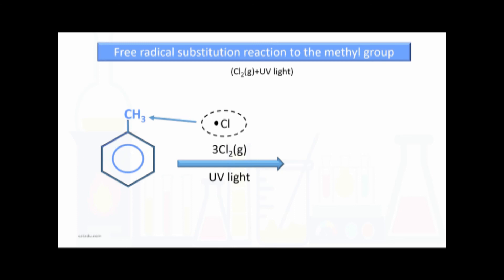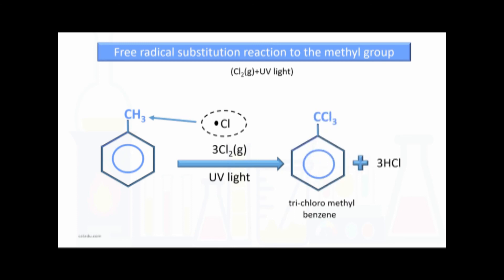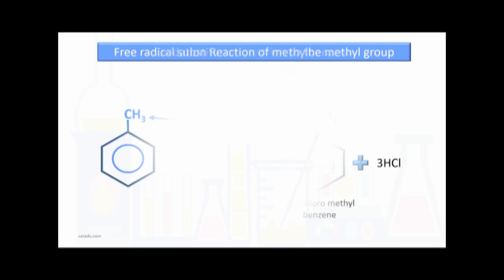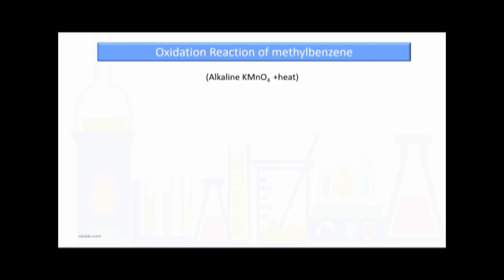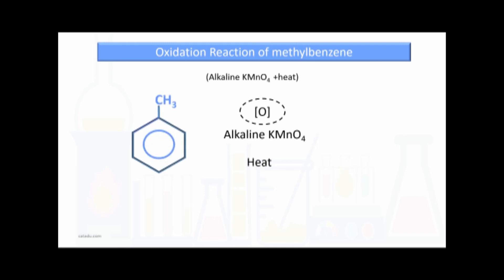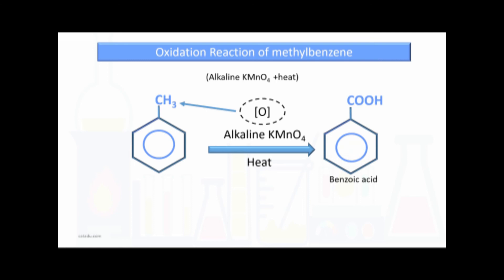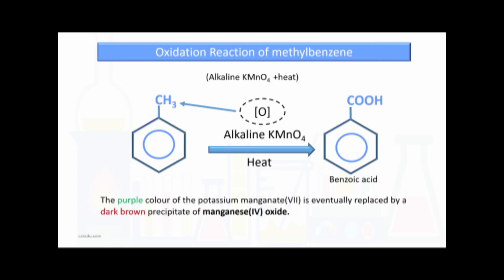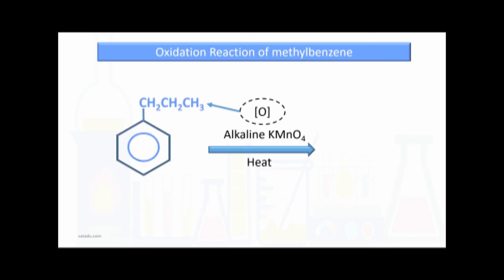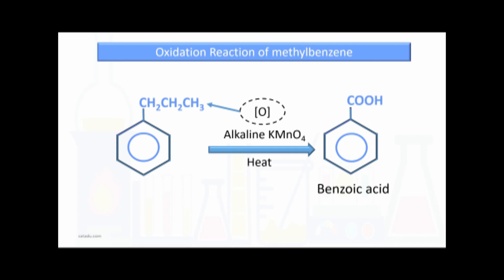The oxidation reaction of the methyl group: the reagent is alkaline potassium manganate (KMnO₄) — it must be alkaline, not acidic — and heat is the condition. The oxidizing agent [O] oxidizes the methyl group, removing hydrogens, and we get benzoic acid as the product. In this reaction, the purple color of potassium manganate is replaced by a dark brown precipitate of manganese dioxide. For propylbenzene, the same product, benzoic acid, is obtained because the benzene ring connected carbon can sustain, while the others are oxidized to carbon dioxide and water.